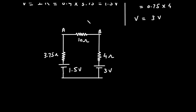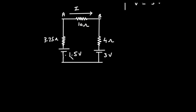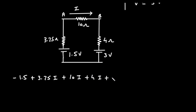Now we have to find the current through branch AB, which we can find using KVL. Let this current be I. Starting from one point and applying KVL: minus 1.5 volt, plus 3.75 into I, plus 10I, plus 4I, plus 3 is equal to 0. We are assuming this direction of current.